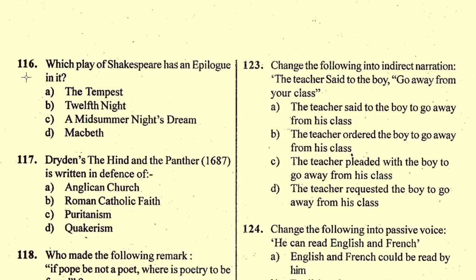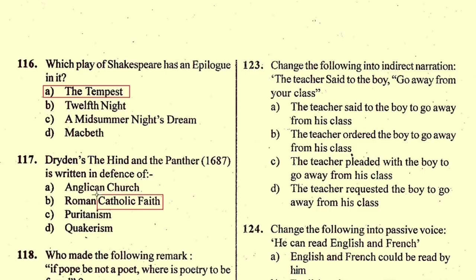Question number 116: Which play of Shakespeare has an epilogue in it? The right option is A, 'The Tempest'. Question number 117: Dryden's 'The Hind and the Panther' (1687) is written in defense of — the right option is B, the Roman Catholic faith.